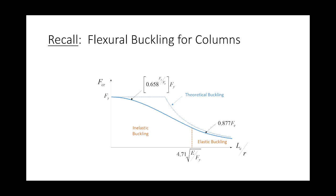I want to begin by going back to this. This solid blue curve is the flexural buckling curve for columns. The way this works is we take the slenderness of the column — the KL over R, or as the spec indicates it, LC over R — and we compare that against 4.71 times the square root of E over Fy. If the slenderness is less than this limit, we have an inelastic buckling expression; if it's greater, we have an elastic buckling expression. So there are two ranges for columns, and a single anchor point that delineates whether we're in inelastic or elastic buckling.